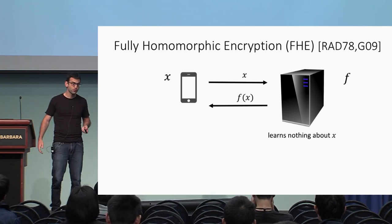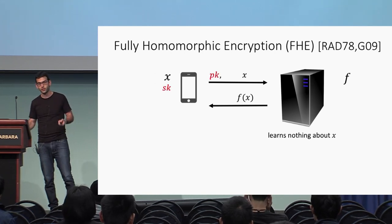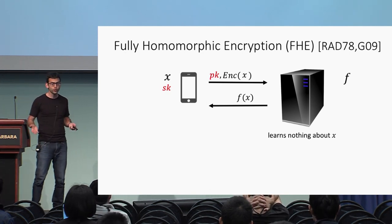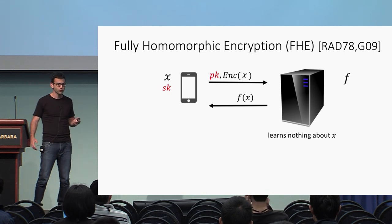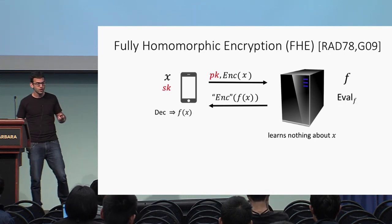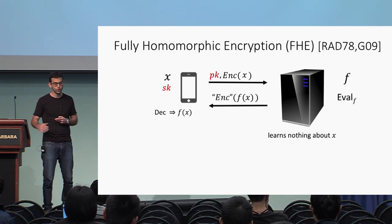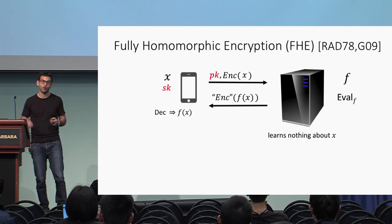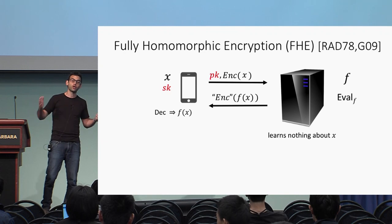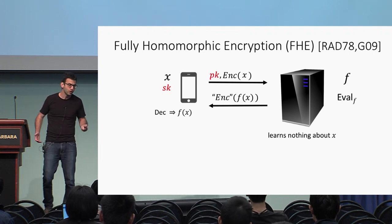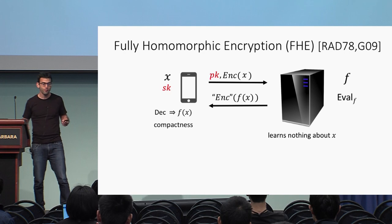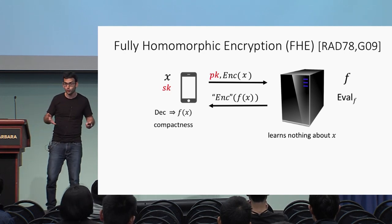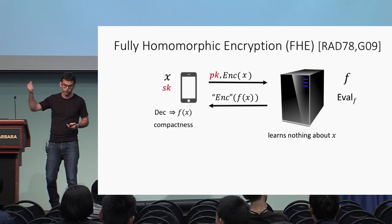The way this is done with fully homomorphic encryption is that the client generates a pair of keys — a secret key and a public key — and encrypts its input using the public key. Our security requirement is just standard semantic security like any other encryption scheme, but with fully homomorphic encryption the server can perform homomorphic evaluation on ciphertext and get from an encryption of x to an encryption of f of x. This doesn't have to look like a fresh encryption of f of x, but it needs to decrypt to the right value. We require the notion of compactness, meaning the length of the encryption of f of x and the time to decrypt it should be independent of the complexity of the function f.